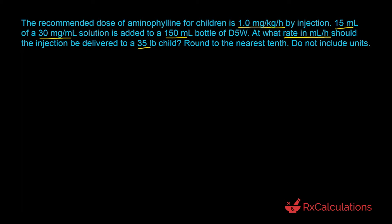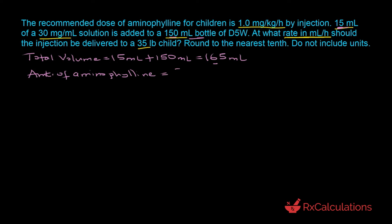The total volume is found by adding the volume of the additive to the bag volume: 15 mL + 150 mL = 165 milliliters. The amount of aminophyllin in this solution is determined using concentration times volume: 30 mg/mL × 15 mL — the milliliters cancel out — giving 450 milligrams. So the 165 mL volume contains 450 milligrams of drug.